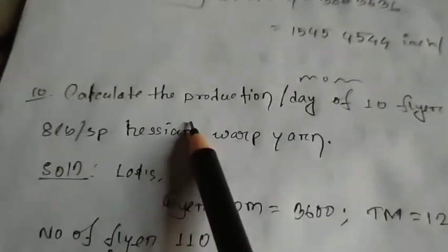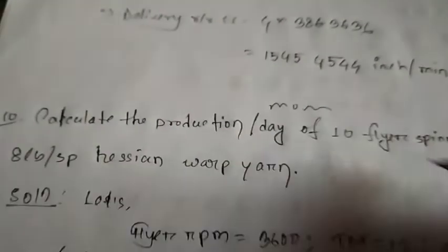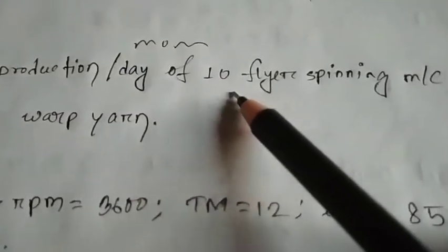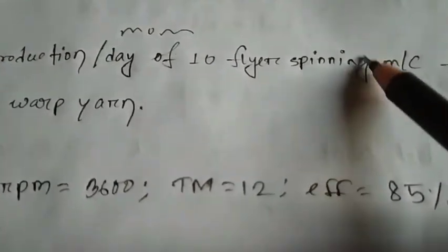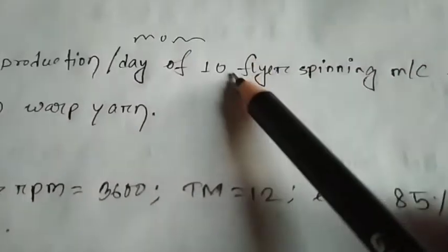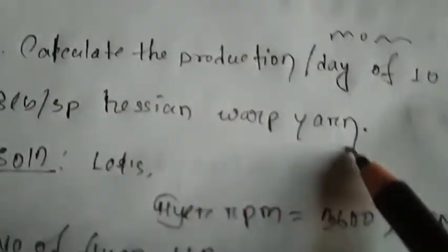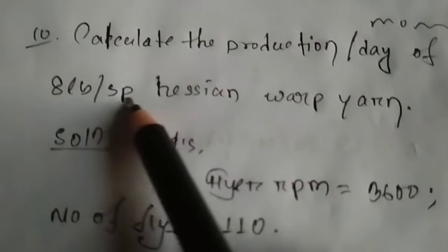So we have a jute spinning frame. We have a production part of the product. We have 10 flyer spinning frames. 10 jute spinning frames. So we produce Adpon spindle, hashi and warp.